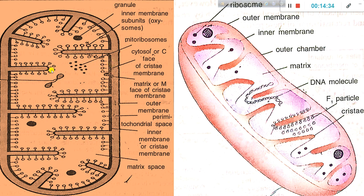This is the matrix. This is the M-phase (matrix side) and the C-phase (cytosol side). The C-phase and M-phase are clearly visible. The F1 particles are attached to the inner membrane on the M-phase side.